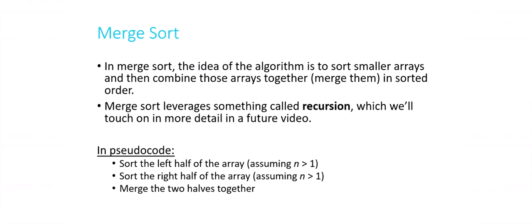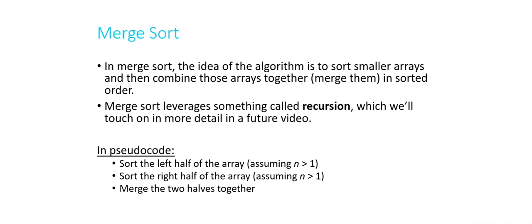Merge sort leverages recursion, which we'll talk about in another video. If you want a better understanding of how recursion works, you might want to watch that video before this one, because this will reference recursion quite a bit. Merge sort is definitely the most complicated of the four sorts we cover, so I'll go through it more slowly. The algorithm itself has just a few steps: sort the left half of the array, sort the right half of the array, and then merge the two halves together.